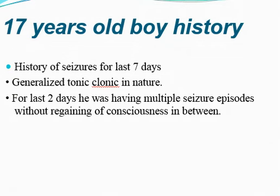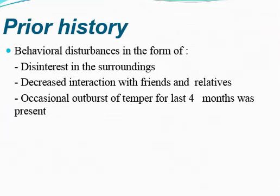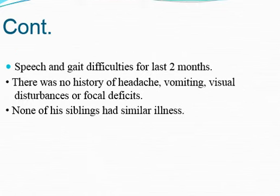A 17-year-old boy came with a history of seizures for the last 7 days, generalized tonic-clonic in nature. For the last two days he had multiple seizure episodes without regaining consciousness. There was prior history of behavioral disturbances in the form of disinterest in surroundings, decreased interaction with friends and relatives, and occasional outbursts of temper for the last four months. Speech and gait difficulties for the last two months. There was no history of headache, vomiting, visual disturbances, or focal deficits. None of his siblings had a similar illness.